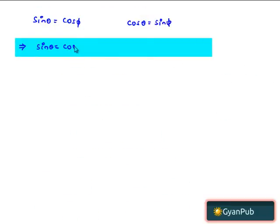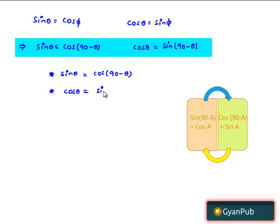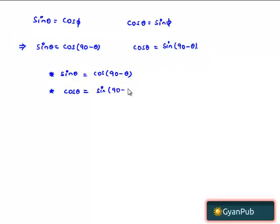Therefore, sin phi can be written as sin(90 minus theta), and cos phi can be written as cos(90 minus theta). Also, cos theta equals sin phi can be written as sin(90 minus theta). Therefore, we have two key relations between complementary angles: sin theta equals cos(90 minus theta), and cos theta equals sin(90 minus theta).